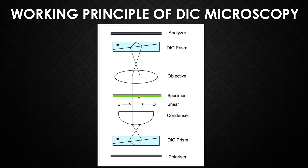Next, the two wavefronts pass through the specimen and are retarded to varying extents within the specimen. The light then enters the second DIC prism through the objective, and the setup recombines the wavefronts. If there has been a phase shift between the two rays as they pass through areas of different refractive index, then elliptically polarized light is the result. Finally, the light enters a second polarizing filter termed the analyzer. The initial polarizer and this analyzer form crossed polars. The analyzer permits the passage of some of the elliptically polarized light to form the final image, and all remaining light is blocked by the analyzer. This is the working principle of DIC Microscopy.